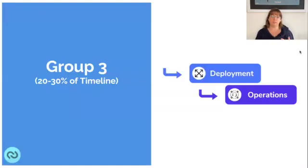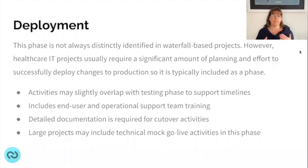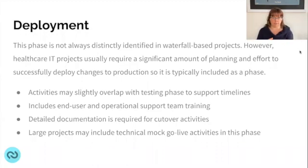Group three covers the remainder of the timeline, including deployment — which is typically added for healthcare IT but wasn't in the original model — and operations, which is your support and maintenance. The deployment phase is included because of the significant impact on users, requiring planning and effort. Some planning activities and training initiatives can begin while still in the final QA testing phase, though full deployment cannot occur until testing is complete and all critical defects are resolved.